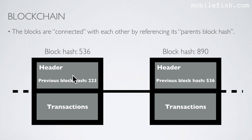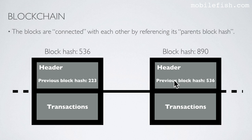In this example, this block has block hash 536 and this block has block hash 890. This particular block is referencing its parent's block by its parent's block hash.